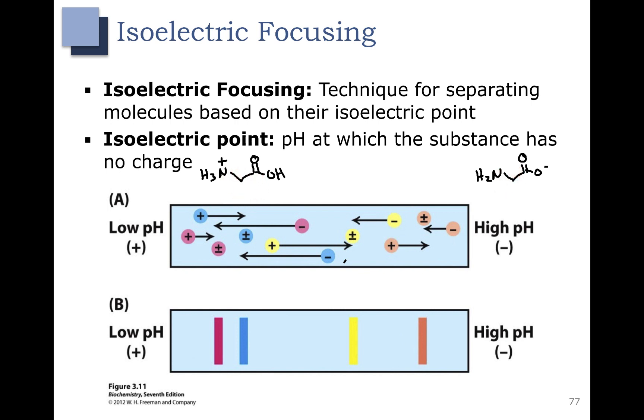So the structure at high pH is going to actually migrate towards the positive charge, and the structure at low pH will migrate towards the negative charge.